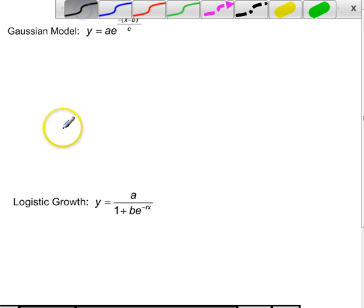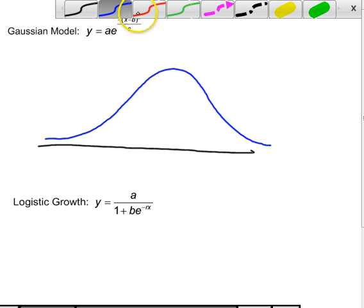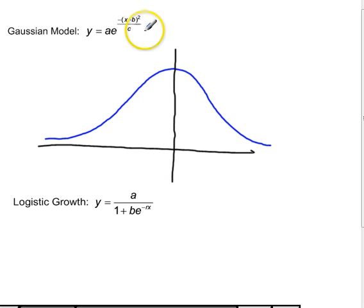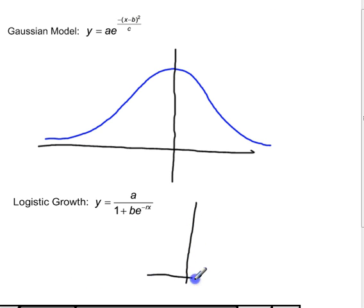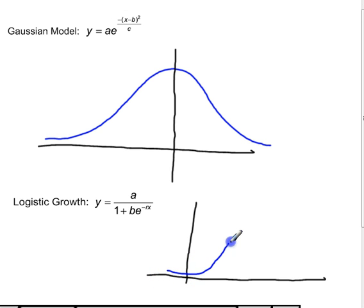A Gaussian model is also an exponential function and it forms what is commonly referred to as a bell curve. Depending on what b is, it'll be shifted left or right. Logistic growth is used to model populations because populations do not increase exponentially forever. They start out slowly, increase very rapidly, and then as they reach the carrying capacity of the environment, they level off. If you want a curve that looks like that, you'll use a logistic growth model.